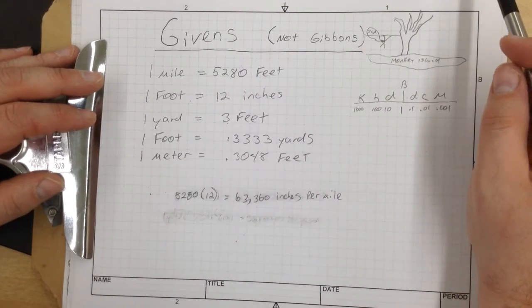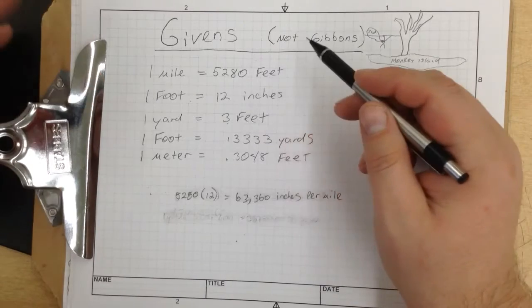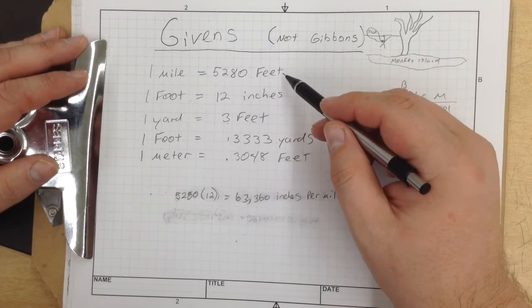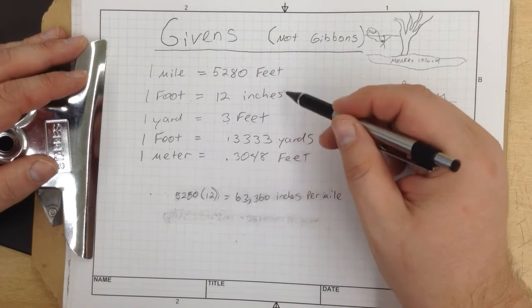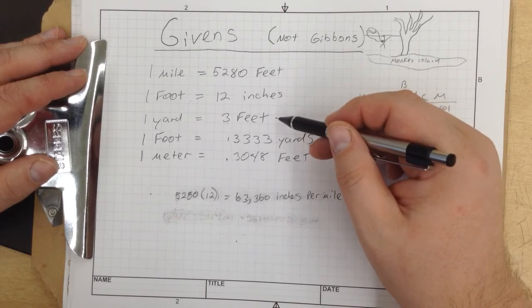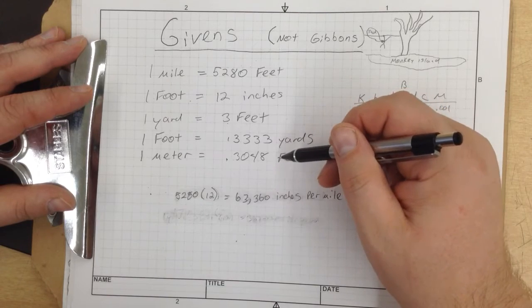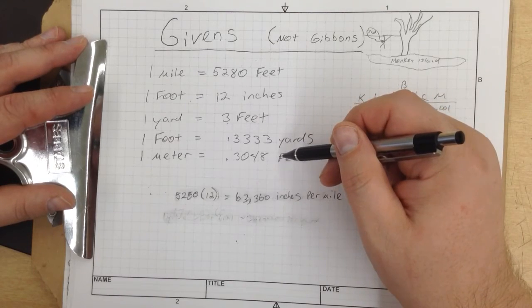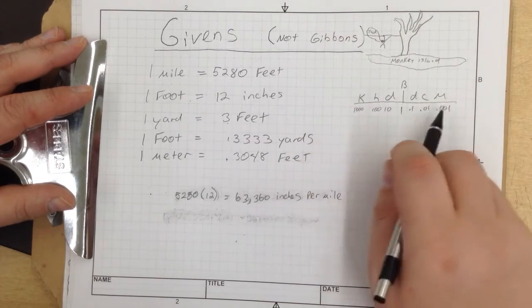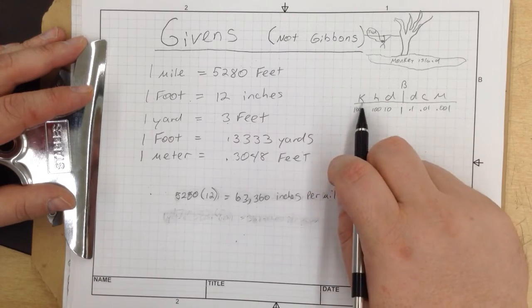Givens are information that we know. We know there's 5,280 feet in a mile, 12 inches in a foot, 3 feet in a yard, 0.3333 yards in a foot, and 0.3048 feet in a meter.